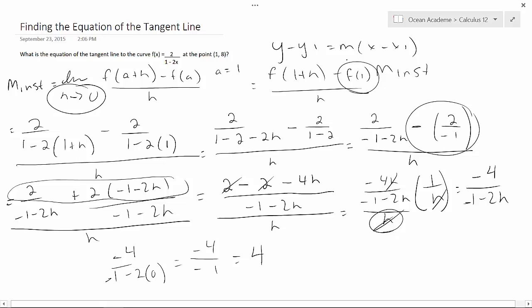So now to rewrite our equation, we know that it's y minus our y₁, which was 8 from here, equals our slope times (x - 1). And that is how you find the equation of the tangent line.